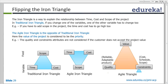In traditional project management, requirements remain fixed and are never revised. If I need a jet fighter, my requirement stays as a jet fighter. Time may change — estimated at two years but turns out to be three or four years — and cost obviously increases with time, but the scope never changes.